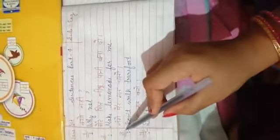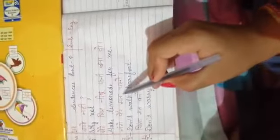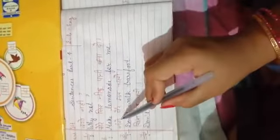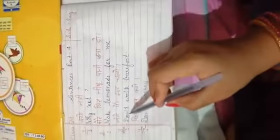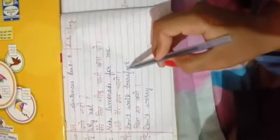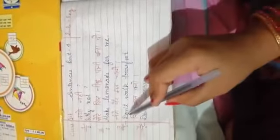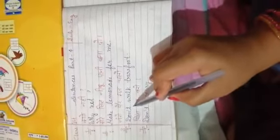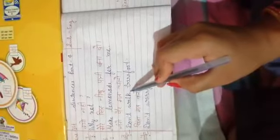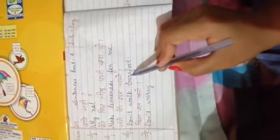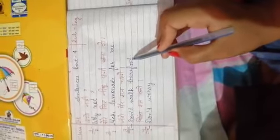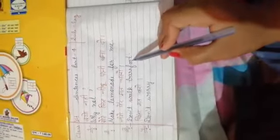Next sentence: नंगे पैर मत चलो. Don't walk barefoot. Don't walk barefoot. D-O-N-T, don't. W-A-L-K, walk. B-A-R-E-F-O-O-T, barefoot. Don't walk barefoot.